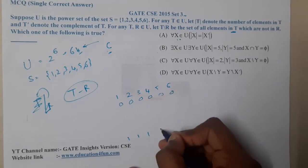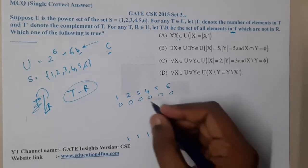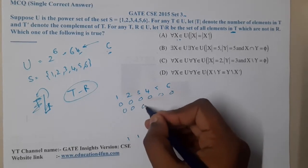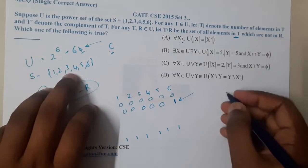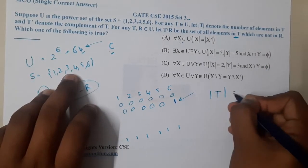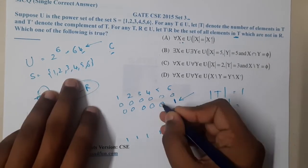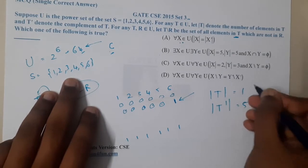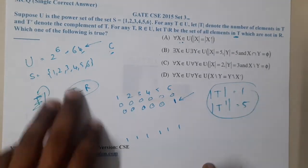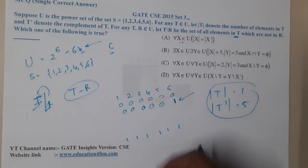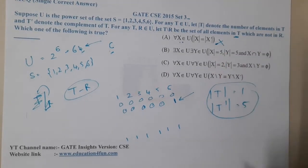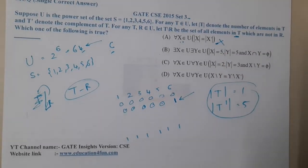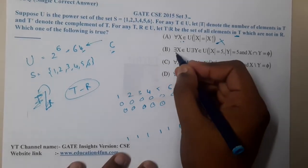Consider a subset with only one element — for example {1}. Then |t| = 1, but |t'| = 5 (the complement has five elements). Since 1 ≠ 5, they are not equal. With this simple counterexample we can clearly say Option A is wrong.